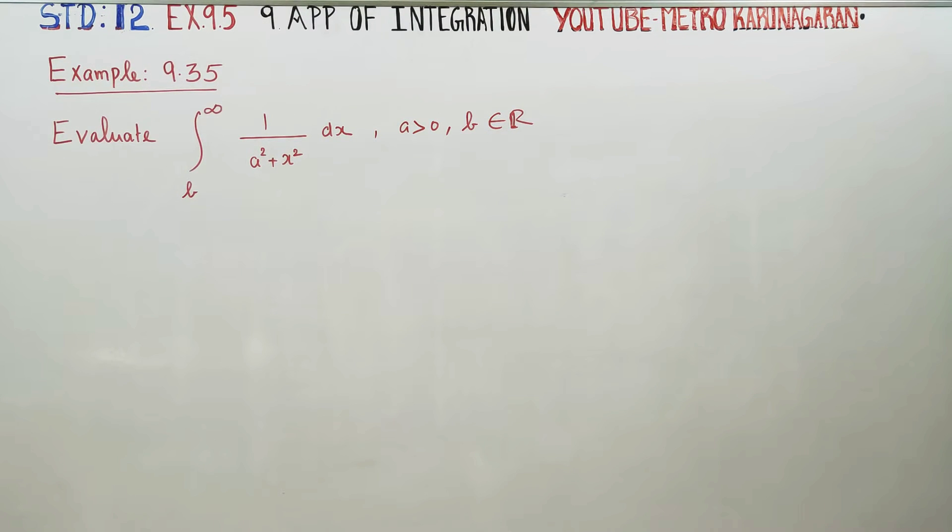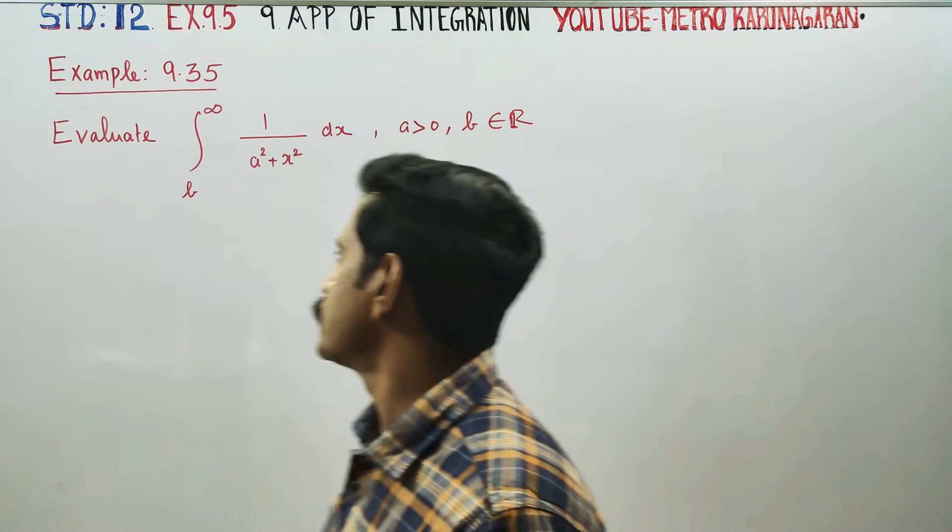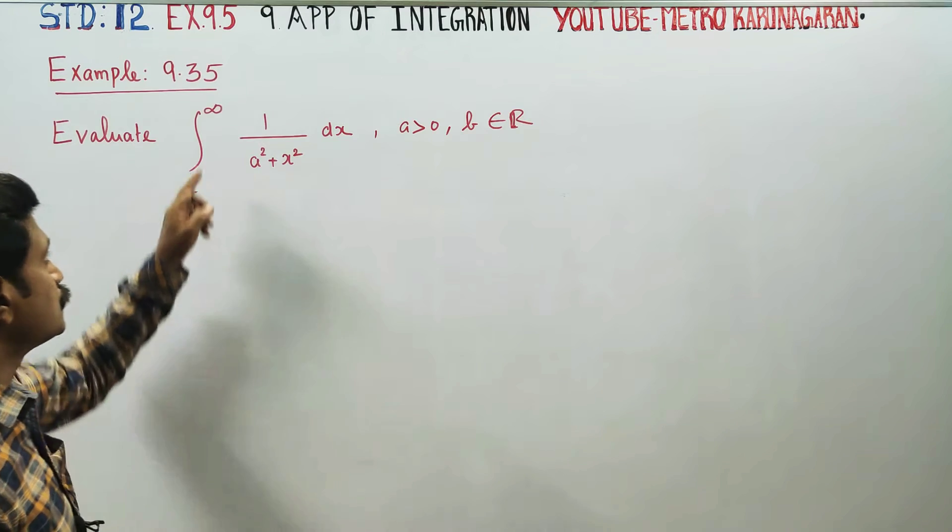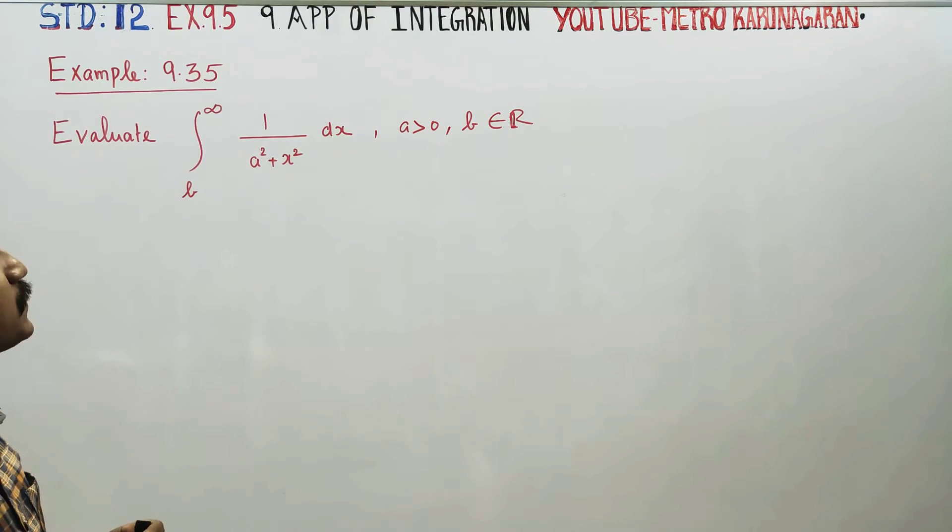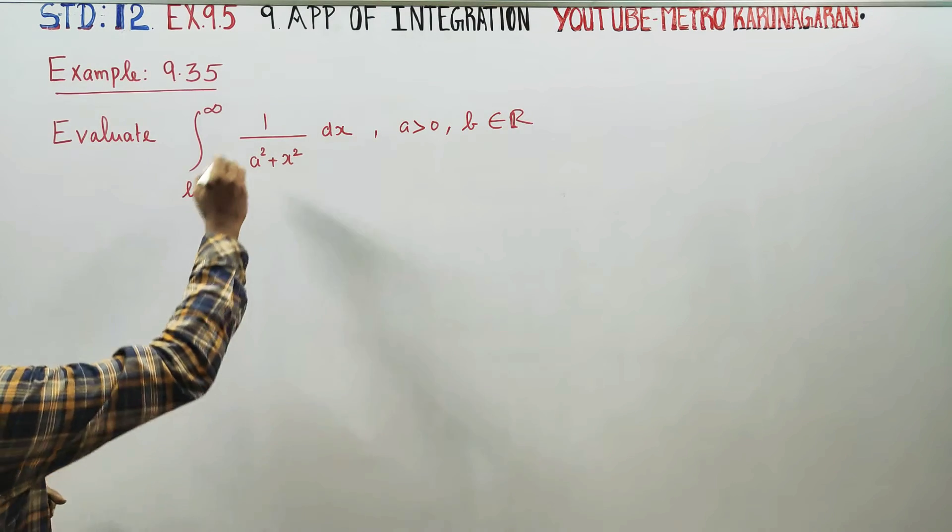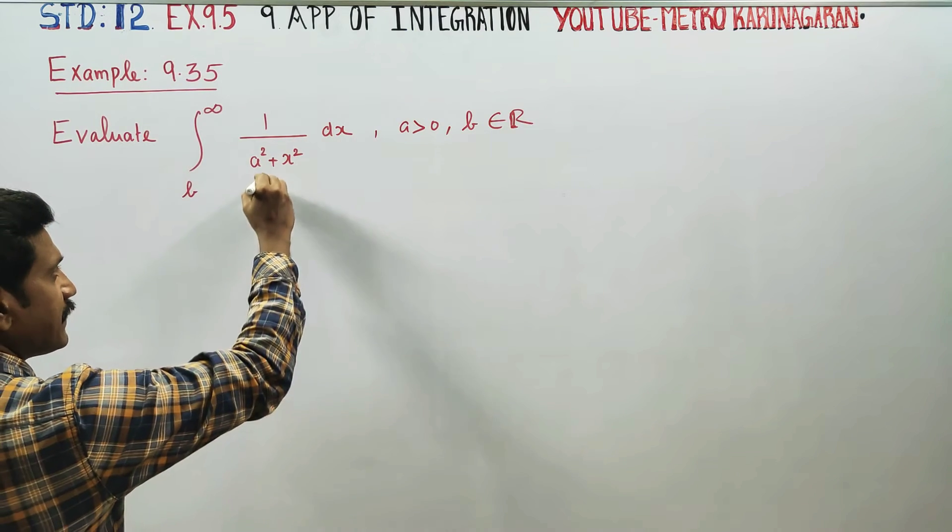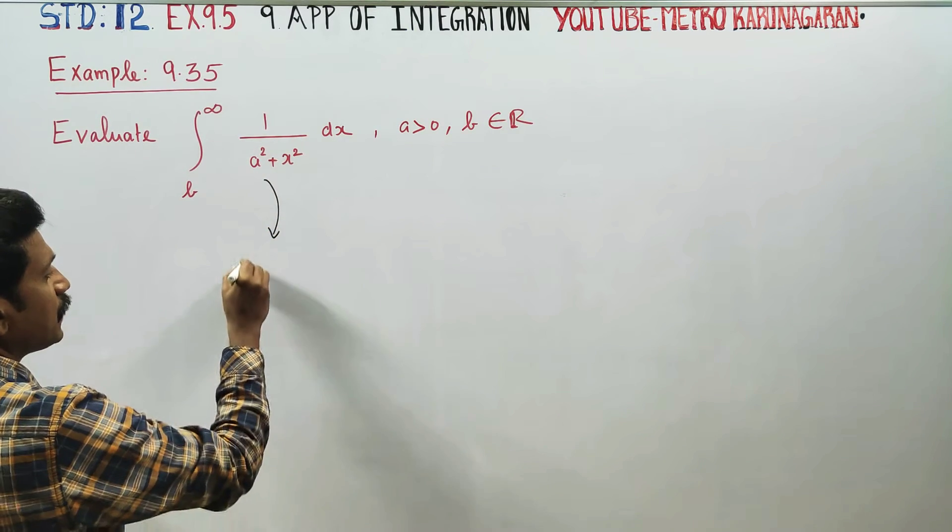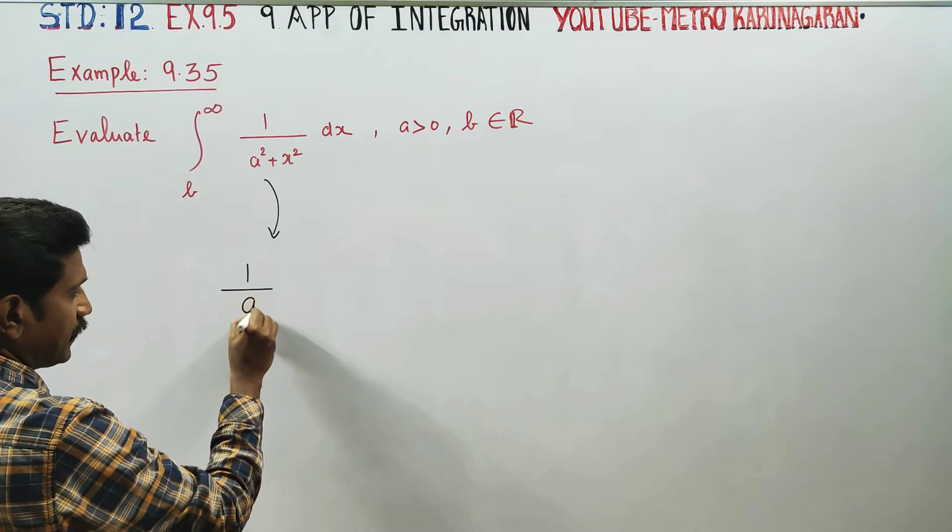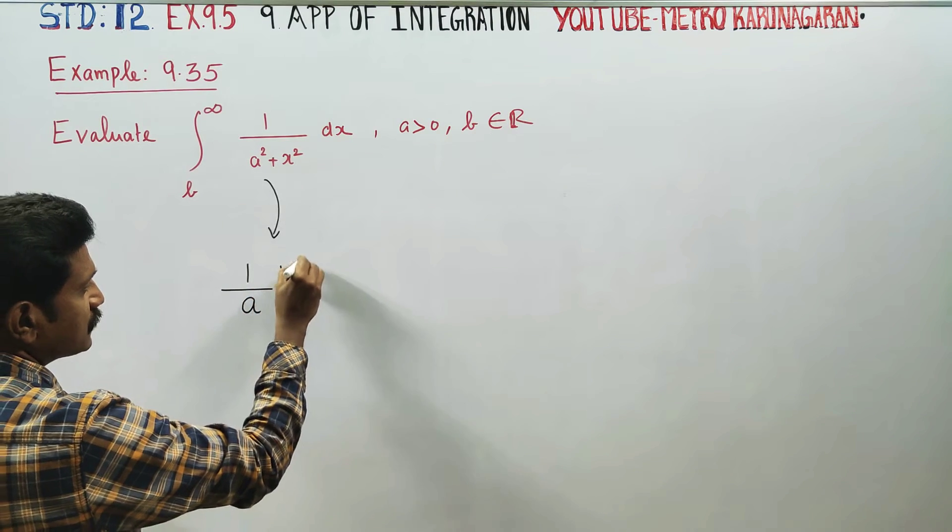Hello, 12th standard students. In example 9.35, you have to evaluate the integral from b to infinity of 1/(a² + x²) dx. The integration of 1/(a² + x²) uses a ready-made answer: 1/a tan inverse of x/a.